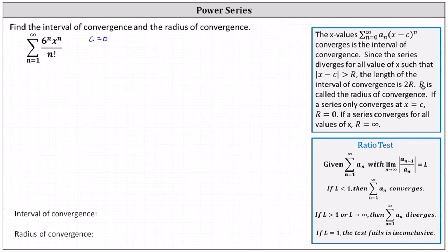To begin to determine the interval of convergence and radius of convergence, let's apply the ratio test where a sub n is the given formula. To determine a sub n plus 1, we substitute n plus 1 for n, which gives us 6 to the power of n plus 1 times x to the power of n plus 1, all divided by n plus 1 factorial.